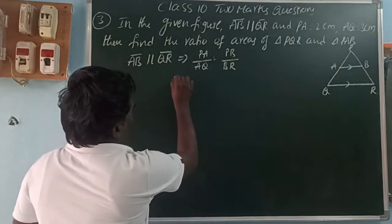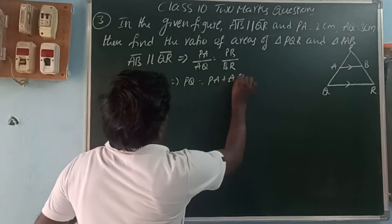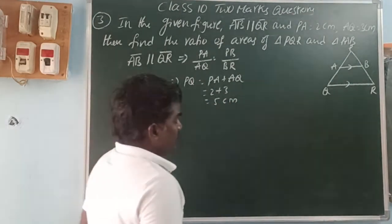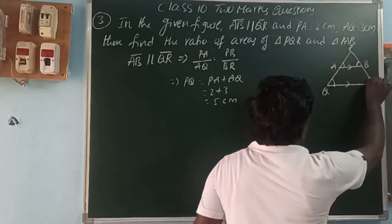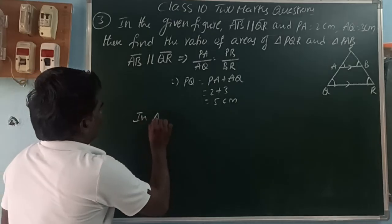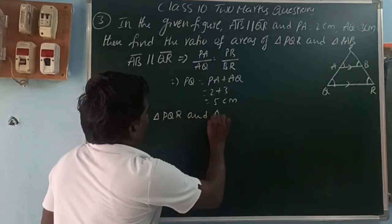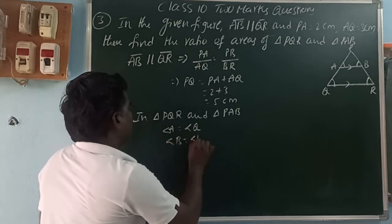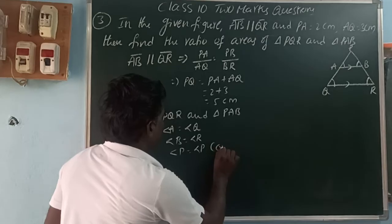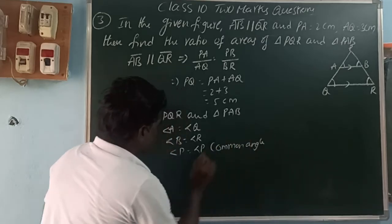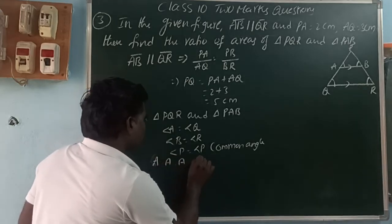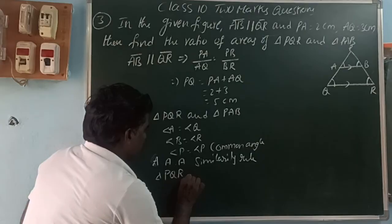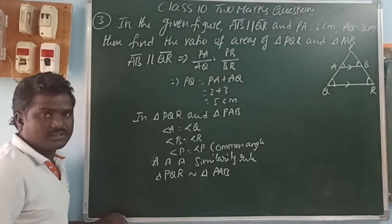Here PA = 2 and AQ = 3, so PQ = PA + AQ = 2 + 3 = 5 centimeters. Since the two lines are parallel, the corresponding angles are equal: angle Q = angle A, angle R = angle B, and angle P is common. Therefore by the Angle-Angle similarity rule, triangle PQR is similar to triangle PAB.